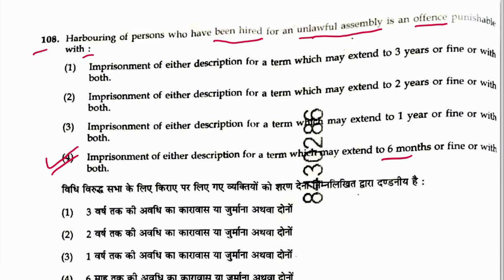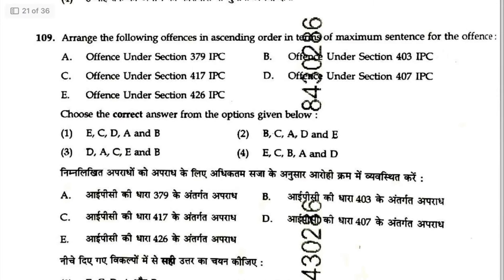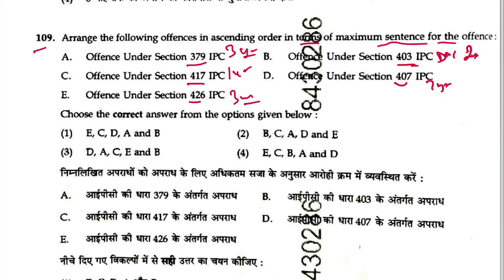The provision for the last opportunity rule is in BNS Section 1, Sub-section 7. Question 109: Arrange offences in ascending order in terms of maximum sentence. Theft — Section 379 IPC, punishment 3 years. Cheating — Section 417, 1 year. Mischief — Section 426. Criminal misappropriation — Section 403. Answer is 4. Section 379 becomes Section 303 in Bharatiya Nyaya Sanhita — for remaining BNS sections, check the comment section.